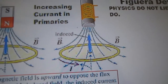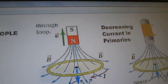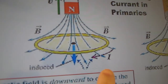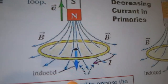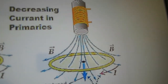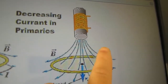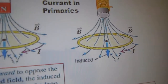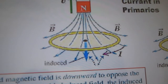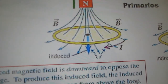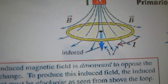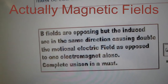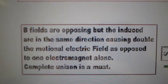Now on this side — the same thing except the magnet is coming out. The induced is in the opposite direction and the current is in the opposite direction. This is the same thing as an electromagnet: all you are doing is raising and lowering the current. The induced magnetic field is downward to oppose the flux change; the induced current must be clockwise as seen from above, but counterclockwise when viewed from the face of the coil.